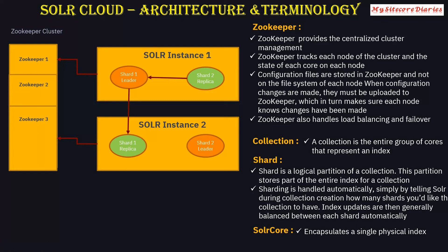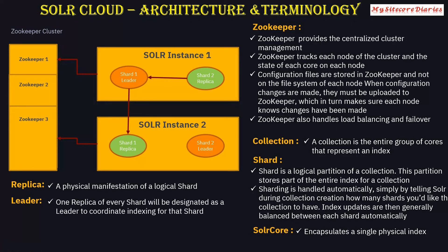A Solr Core is a single physical index. A Replica is a physical manifestation of a logical shard. A Leader is one of the replicas — every shard has one designated as a leader to coordinate indexing for that shard. A Node is a single instance of Solr. Looking at the architecture diagram, you can see two Solr instances — each instance is called a node.